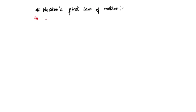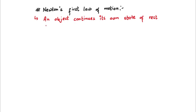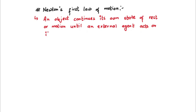So what Newton's first law of motion says is that an object continues its own state of rest or motion until an external agent acts on it. And that's it, that's Newton's first law of motion.